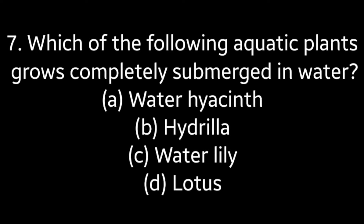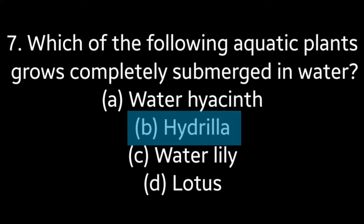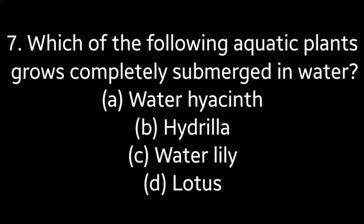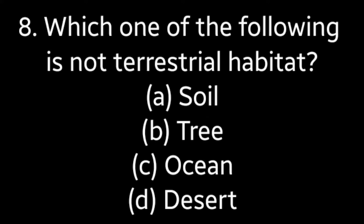Seventh question: Which of the following aquatic plants grows completely submerged in water? Option A: water hyacinth, option B: hydrilla, option C: water lily, option D: lotus. Answer is option B: hydrilla.